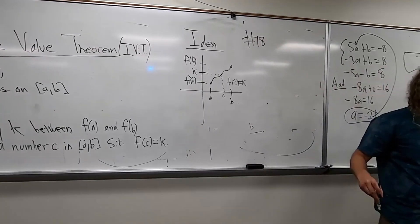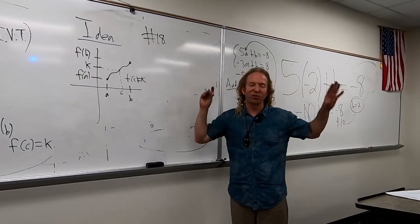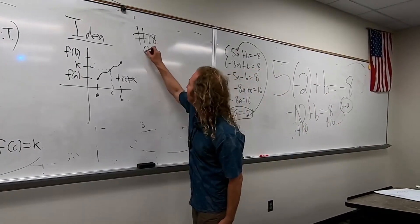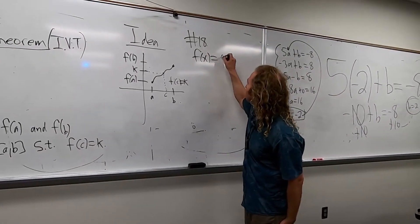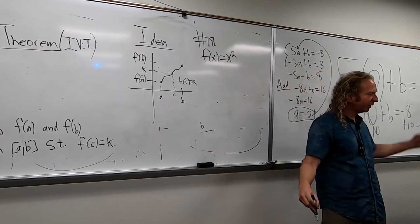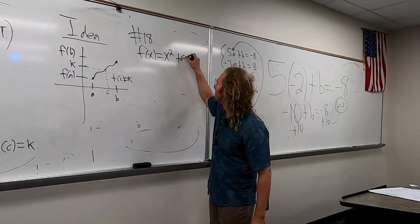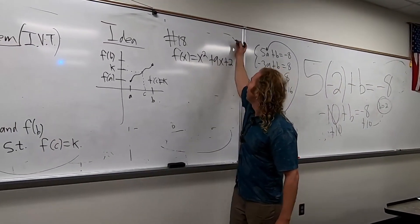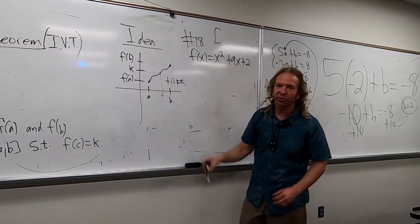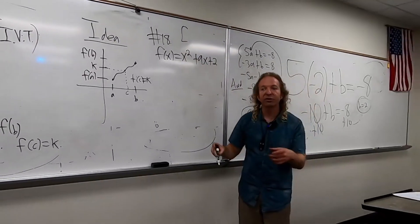So 18, they give us a function. It says verify that it applies. Don't worry about verifying. So f of x equals x squared plus 9x plus 2. And they give us the interval. The interval is 0, 7.